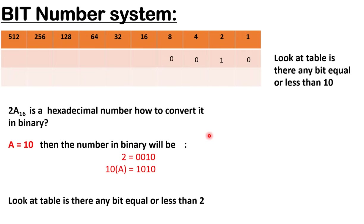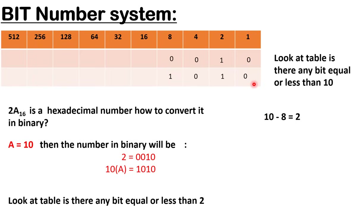Now for the digit A, which equals 10 in decimal. Look at the table: is there any bit equal to or less than 10? There is no bit equal to 10, but 8 is less than 10, so we turn on the 8 bit. Then 10 minus 8 equals 2, so we turn on the 2 bit as well. So 10 (which is A) in binary is 1010. For the final answer of 2A, write the binary of 2 followed by the binary of A: 0010 1010.